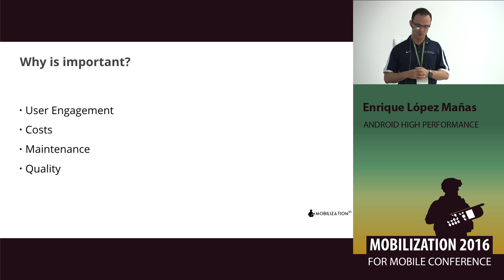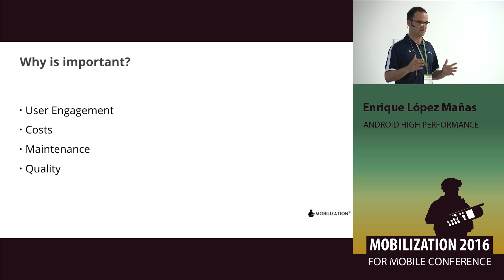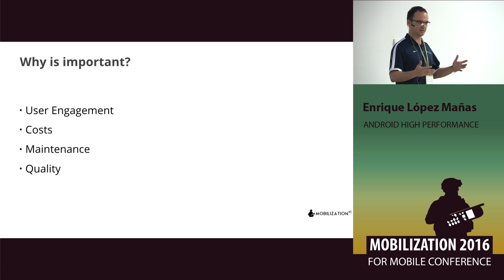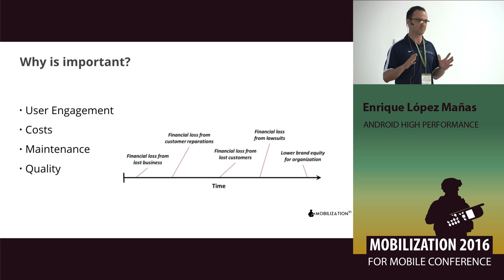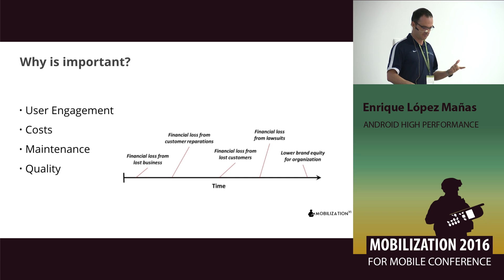Why is this important? We want to keep user engagement — the user is going to use our software and not a competitor's. We want to keep costs low; developing software is very expensive, and if we don't adopt a nice strategy, costs will skyrocket and we'll be out of business. We want to maintain it so new people can come to our company and work on our projects. Above all, we want quality software. I always like to mention the financial aspect when talking with a manager, because when you mention money — dollars or euros — they start understanding that this is important.